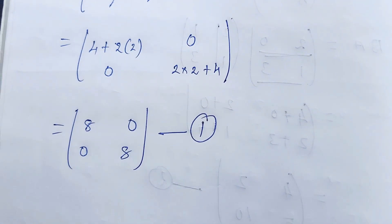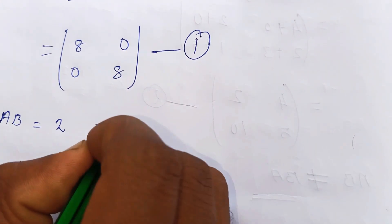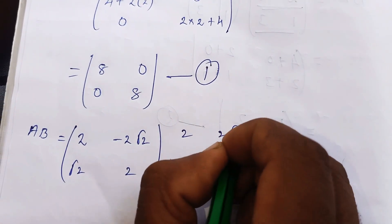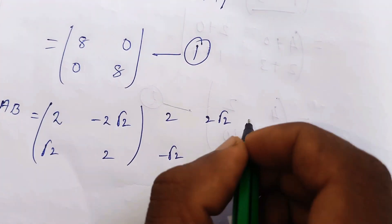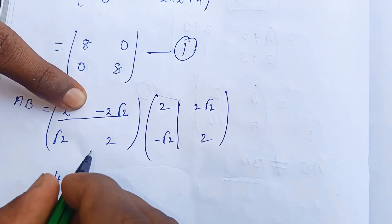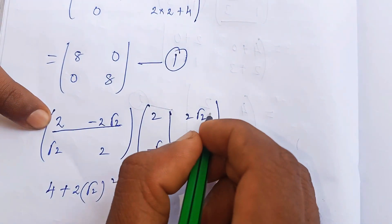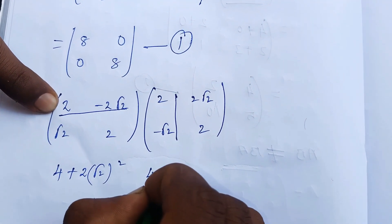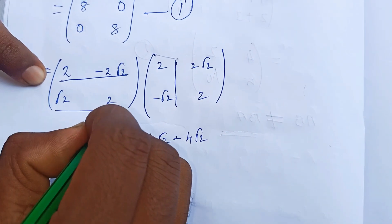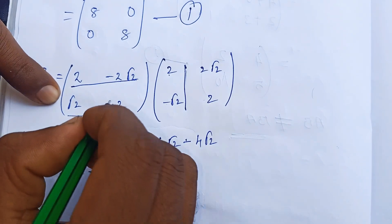Now computing BA. B equals [2√2, -√2; 2, 2] and A equals [2, -2√2; √2, 2]. First row, first column: 2×2 = 4, plus (-√2)(√2) terms. First row, second column: 2×(-2√2) plus (-√2)(2), giving 4√2 terms that combine. Second row, first column: 2×2 plus 2√2 × √2 terms.